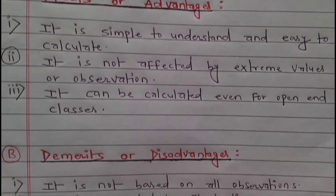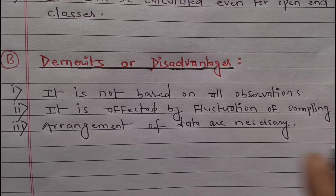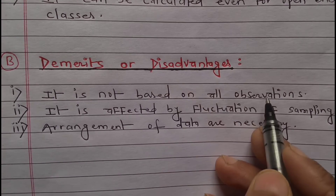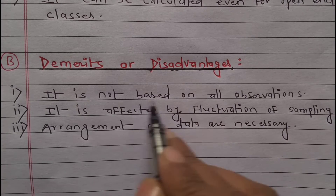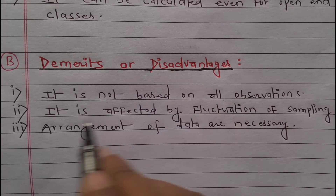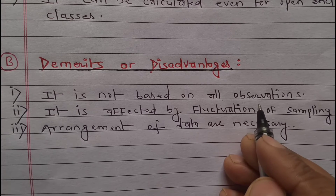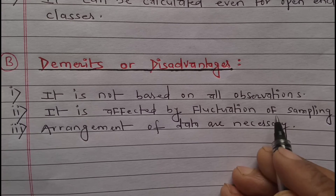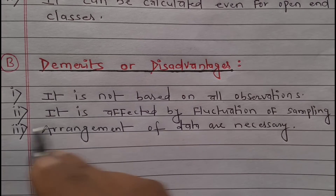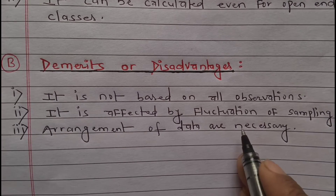Now the demerits or disadvantages of quartile deviation: Point one — it is not based on all observations. Point two — it is affected by fluctuation of sampling. Point three — arrangement of data is necessary to calculate quartile deviation.